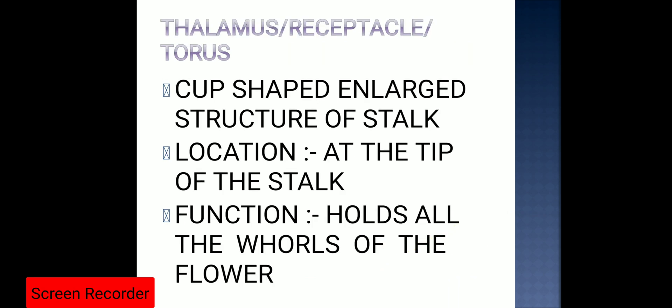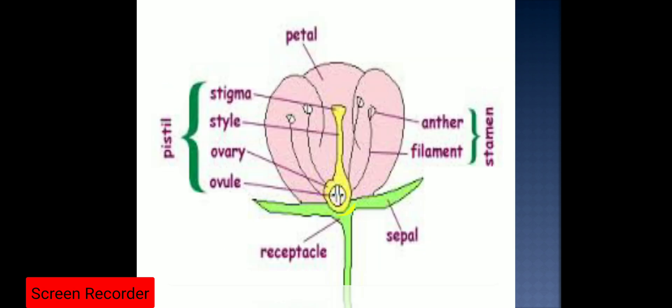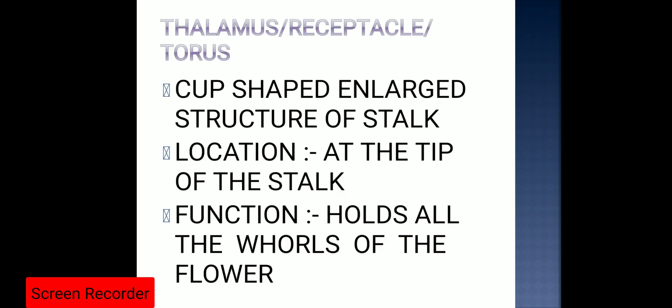The next part of the flower is the thalamus, also called the receptacle or torus. It is the cup-shaped, enlarged structure of the stalk, present at the tip of the stalk. Its function is to hold all the whorls of the flower. This is all for today; next class we will be continuing with all the four whorls of the flower. Thank you everyone.